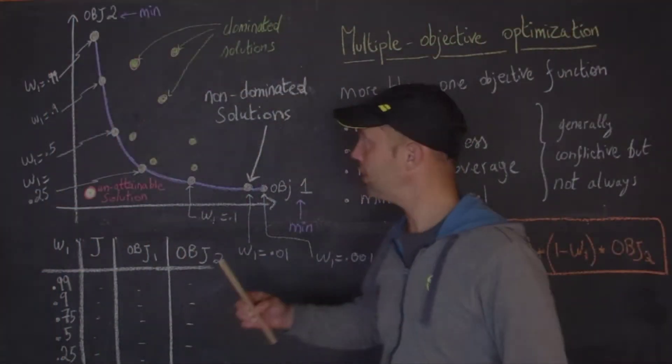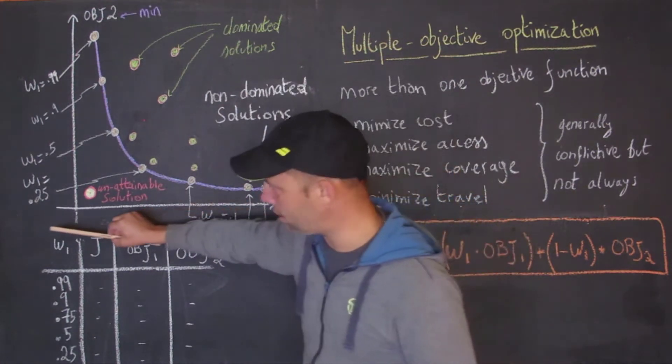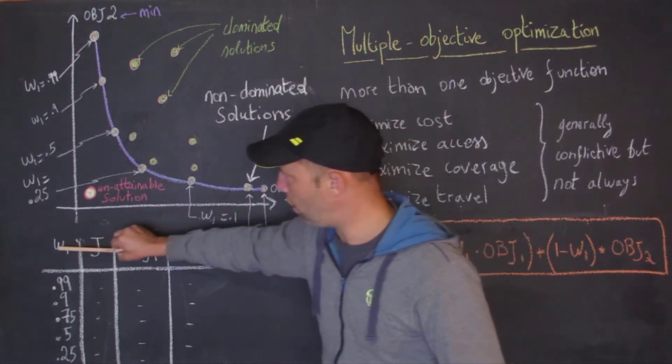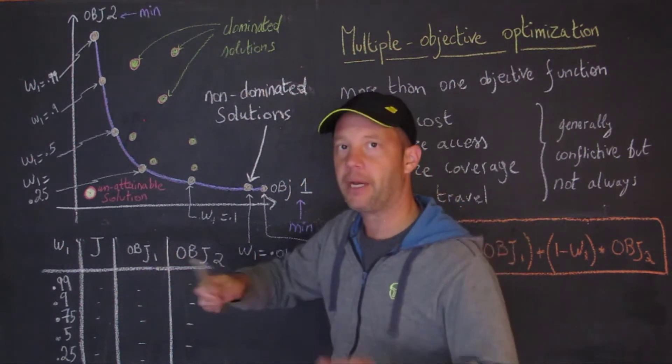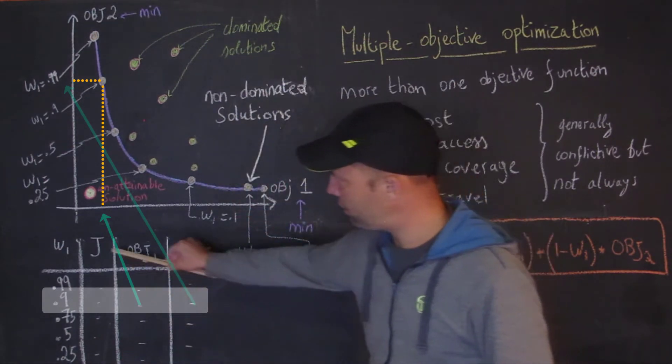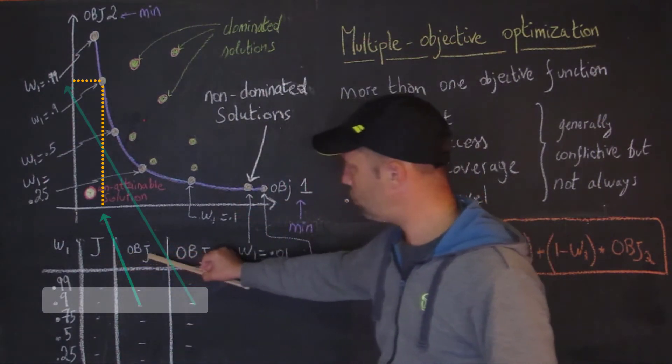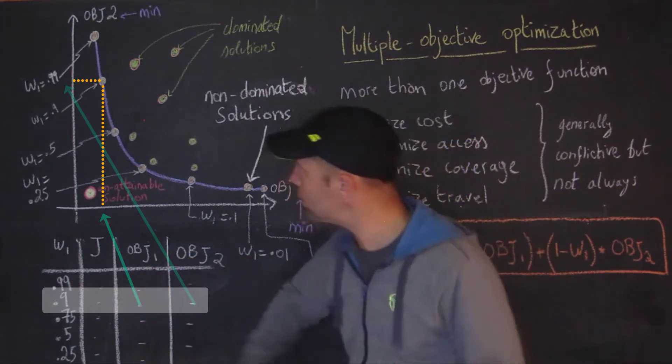Briefly here we have these two objectives, one and two. I think the best is to start with a table. You have the different values for W1, and remember W2 is 1 minus W1. We can list all of them here, and then the objective function J here is going to be a weighted sum of objective one and two. What we want to do for each of these weights is map the solution here.